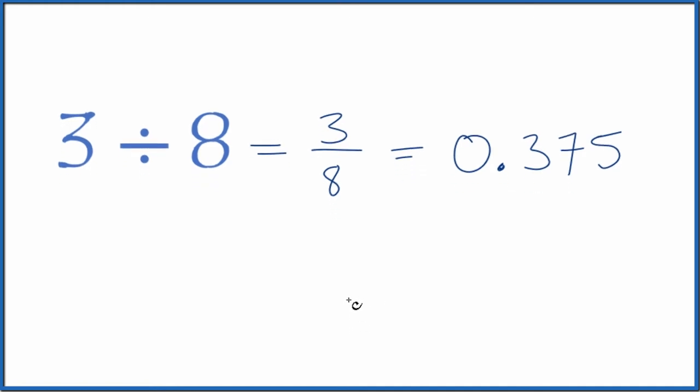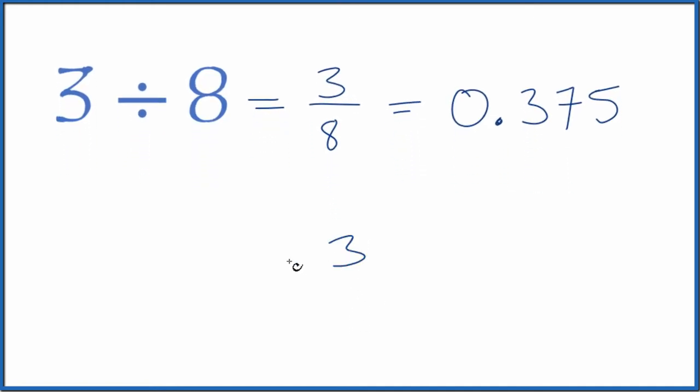If you wanted to do this longhand, you could say here you have 3 and you want to know how many times 8 goes into 3. 8 doesn't go into 3. Let's call this 30 and then we could put a 0 with a decimal point up here.